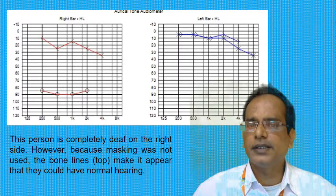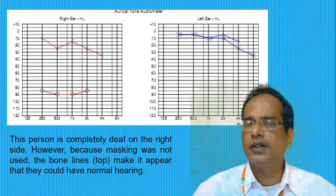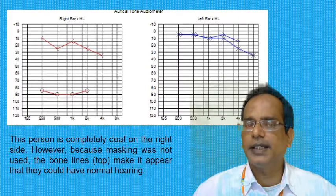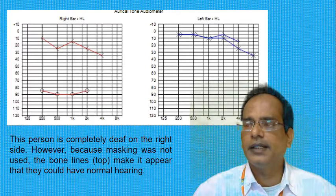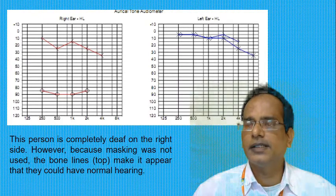Here, this person is completely deaf on the right side. However, because masking was not used, the bone lines make it appear as they could have a normal ear. When masking is not used, one incorrectly concludes there is better hearing in a bad ear than is really the case, because without masking some of the sound is actually appreciated by the good ear.